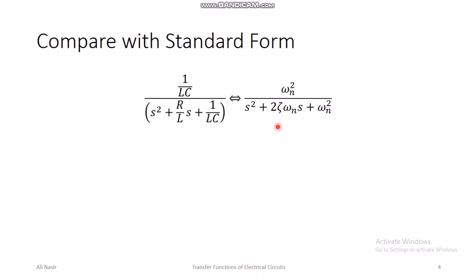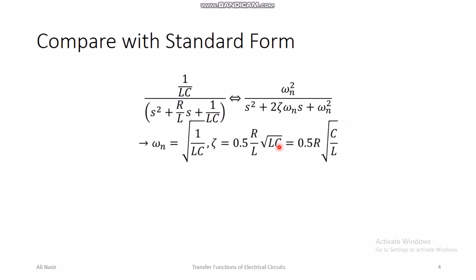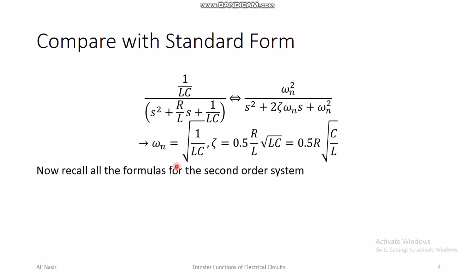Once you compare the RLC circuit transfer function with the standard form, you find that the natural frequency ω_n of the RLC circuit is √(1/(LC)), and the damping ratio ζ is (1/2)·R·√(C/L). Once you have the damping ratio and natural frequency, you can calculate many properties of the circuit.